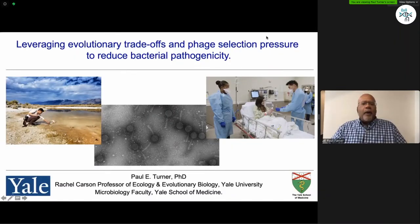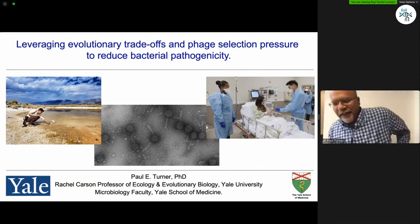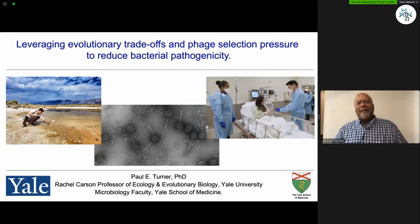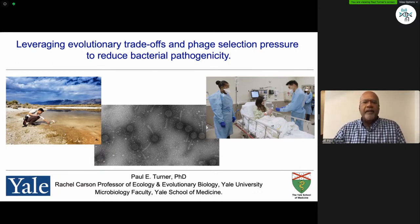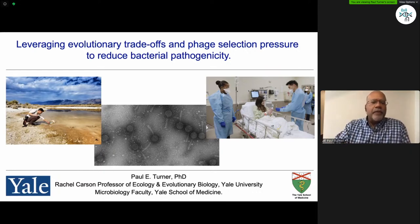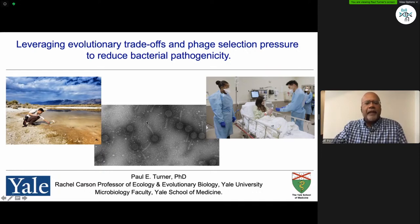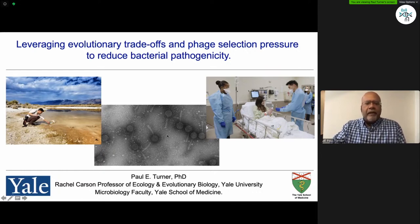I hope to speak for roughly 45 minutes, allowing plenty of time for questions. This beginning slide gives away the punchline of a lot of what we're doing in this one project. On the left, we begin with Ben Chan, a research scientist who's been working with me at Yale, sampling water from nature. These types of samples can yield bacteriophages. Phages are the most plentiful biological entities on the planet — it's very easy to find them in water, soil, and other natural locations. The question is, beyond the amazing research one can do to understand phage biodiversity, what can you use phages for?